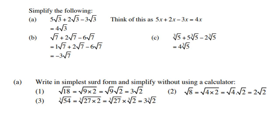Let's look at the next example — write in simpler surd form and simplify without using a calculator. Square root of 18 can be split as square root of 9 times 2. Note that 9 is rational and 2 is irrational, so square root of 9 is 3, giving 3 square root of 2. Square root of 8 is square root of 4 times 2, which is 2 times square root of 2. Cube root of 54 is cube root of 27 times 2, so cube root of 27 is 3, giving 3 cube root of 2.